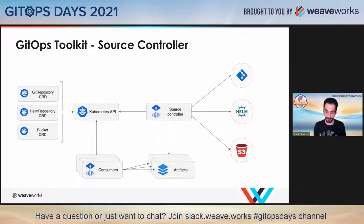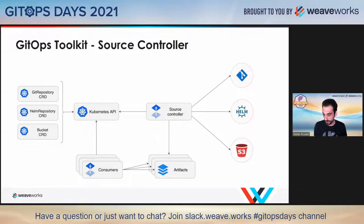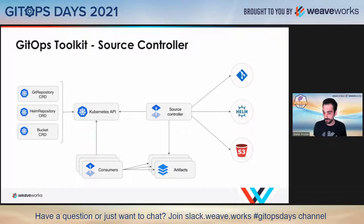So if you push a commit to your Git repo, source controller monitors that repo, pulls the latest change, then notifies the other controllers in your cluster — hey, there is a change you have to act on.